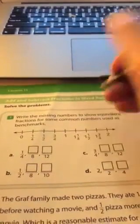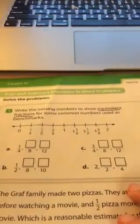Number 1. Write the missing numbers to show equivalent fractions for some common numbers used as benchmarks. Make sure that you've highlighted or underlined equivalent fractions. That means fractions that are the same. Let's look here.